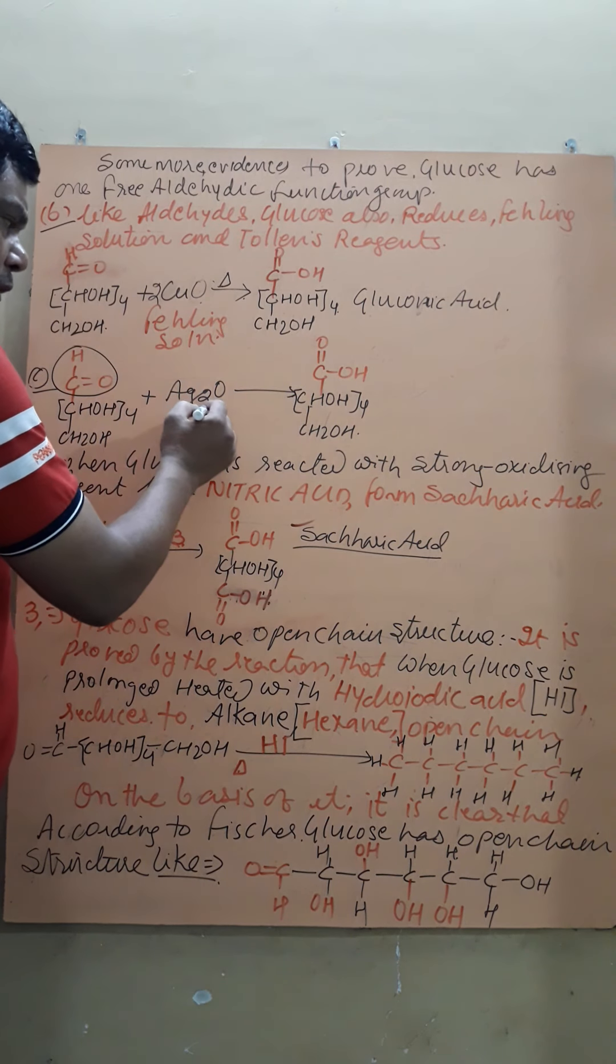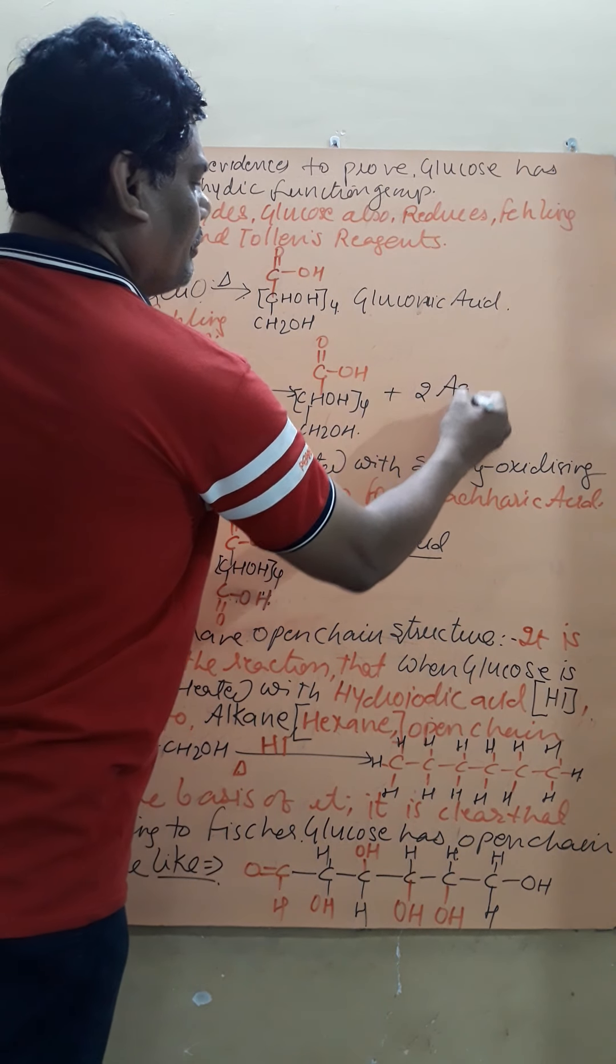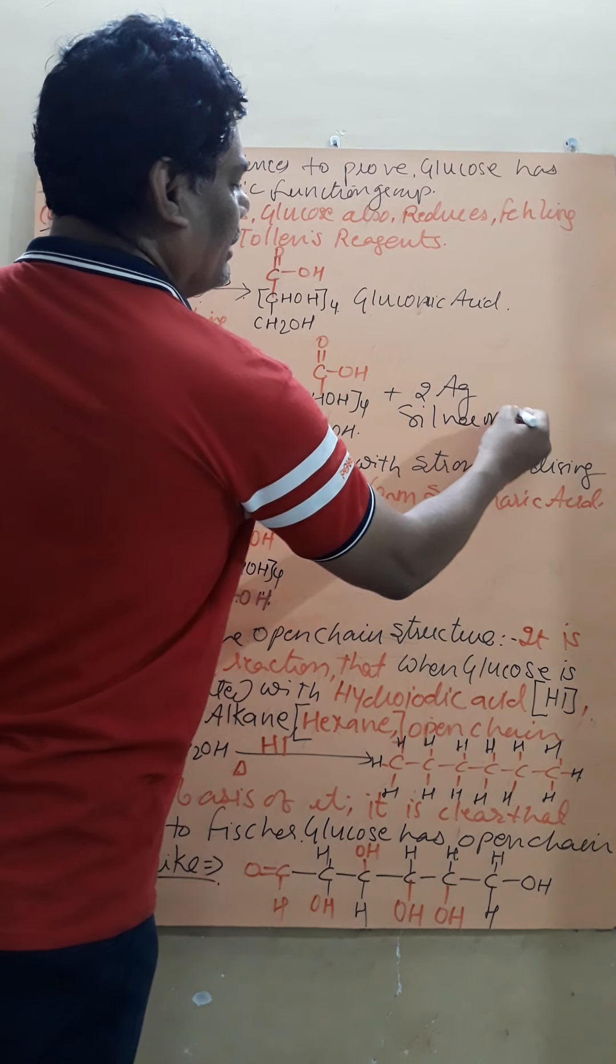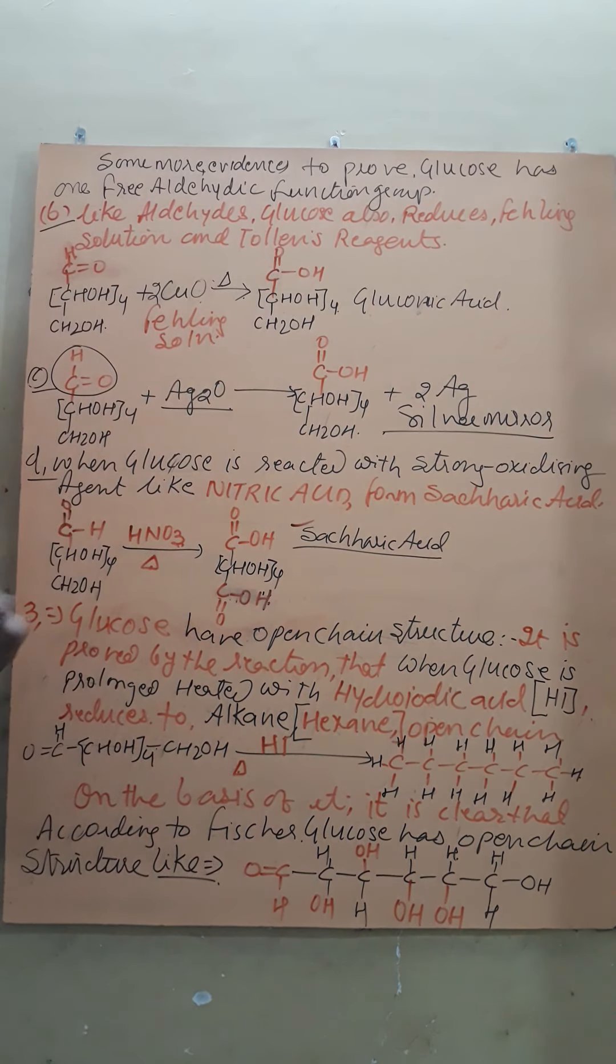And it gives the silver mirror test. The silver mirror test is given only by aldehydes, not by ketones. Hence it proves that glucose has an aldehyde group.